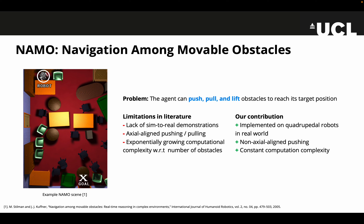Existing literature has tackled this problem with some form of search-based methods, but with simplifications such as lack of sim-to-real demonstrations, constraining obstacle manipulation in an axial-aligned fashion in the x or y direction. Furthermore, the computational complexity of these search-based methods is often exponential with respect to the number of obstacles. In this work, we try to address these points using a deep learning approach.